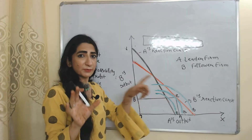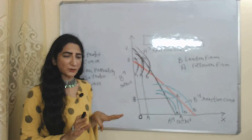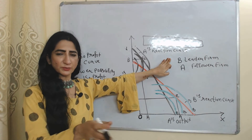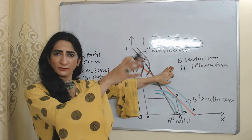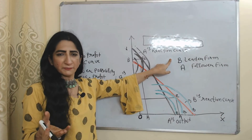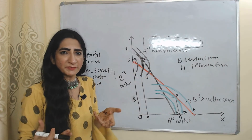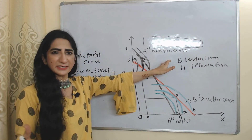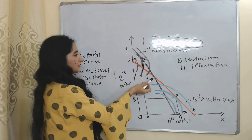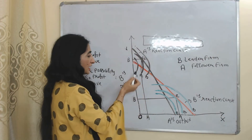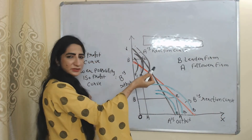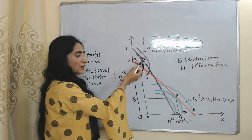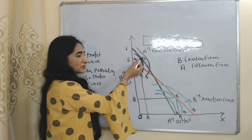Now we will assume B is the leader firm and A is the follower firm. B will take the first move in the market; A just follows the strategy of B. Since B is the leader and a very experienced firm, B can predict in advance the response of A, and based on that response B can decide its own profit-maximization output. The black curve shows A's reaction curve, and P1, P2, P3 are B's isoprofit curves.